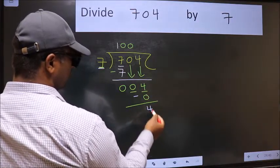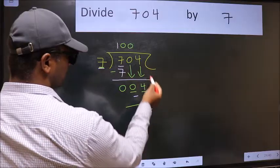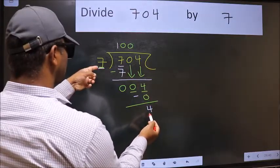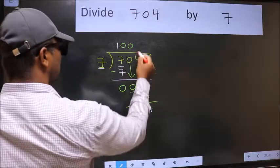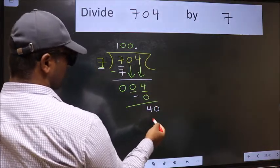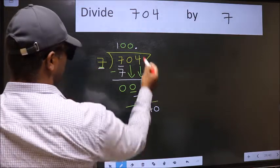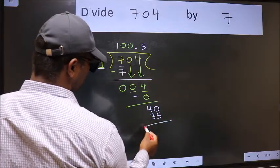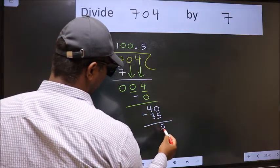Over here, we did not bring any number down. And 4 is smaller than 7. So now we can put dot and take 0. So 40. A number close to 40 in 7 table is, 7 fives, 35. Now we should subtract. We get 5.